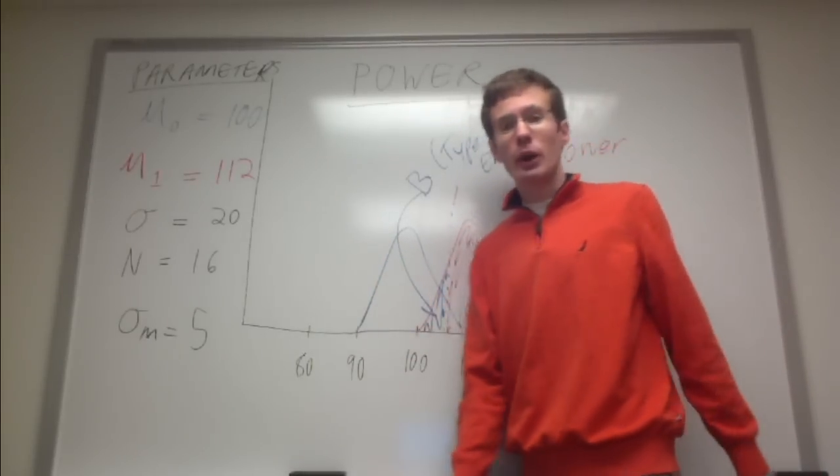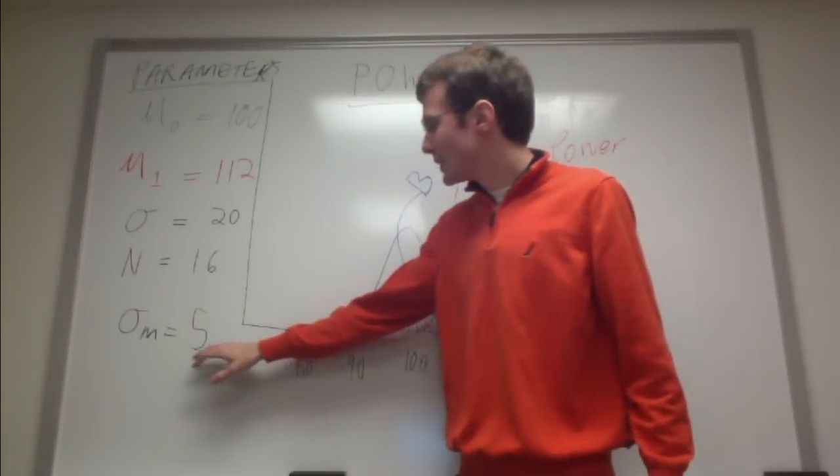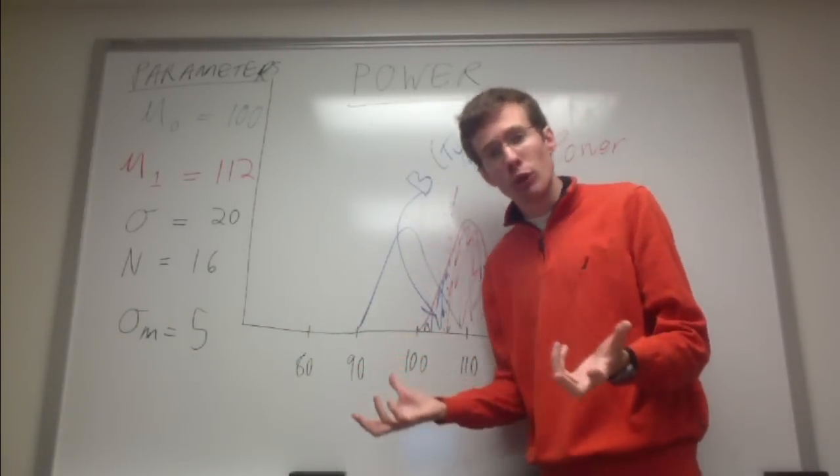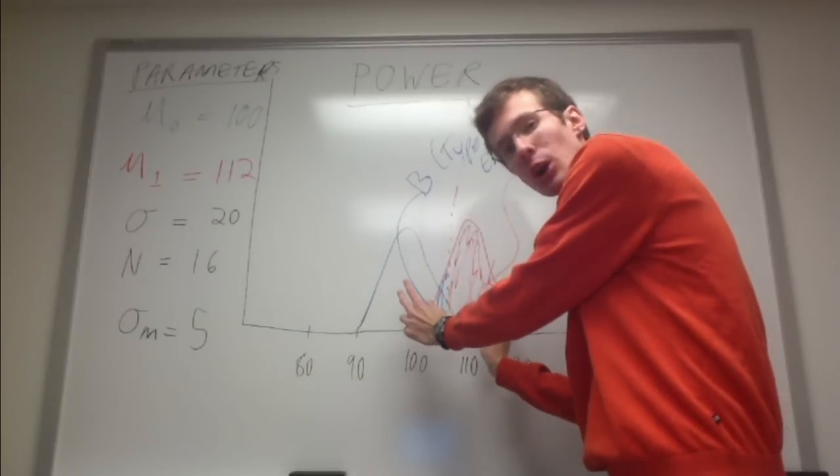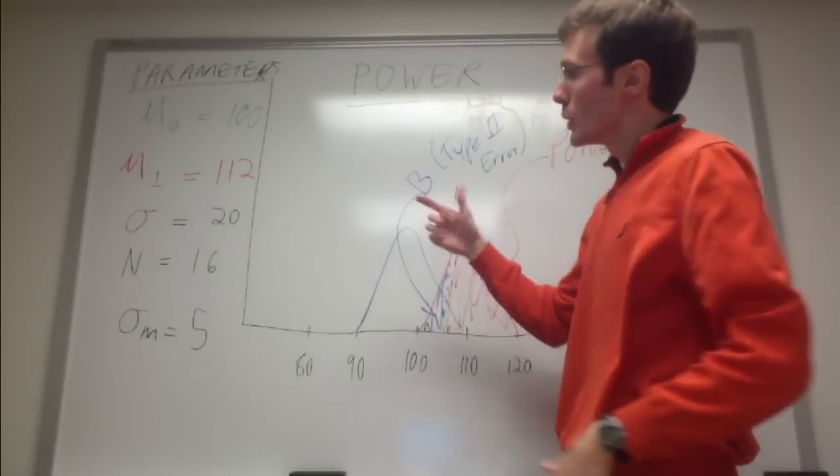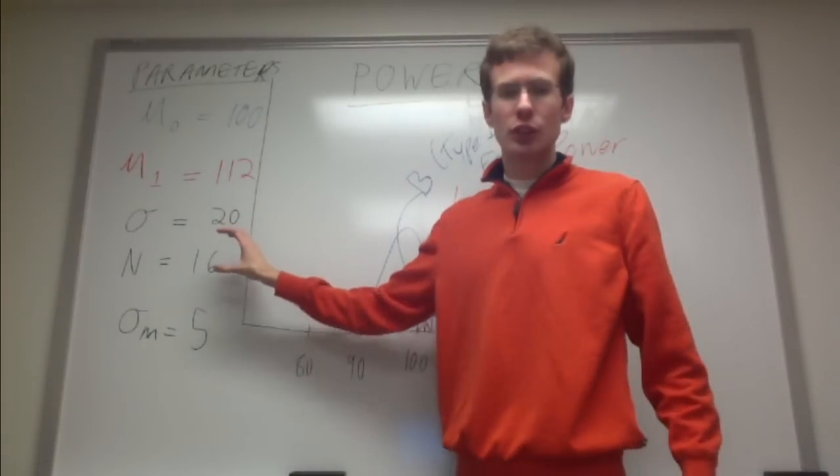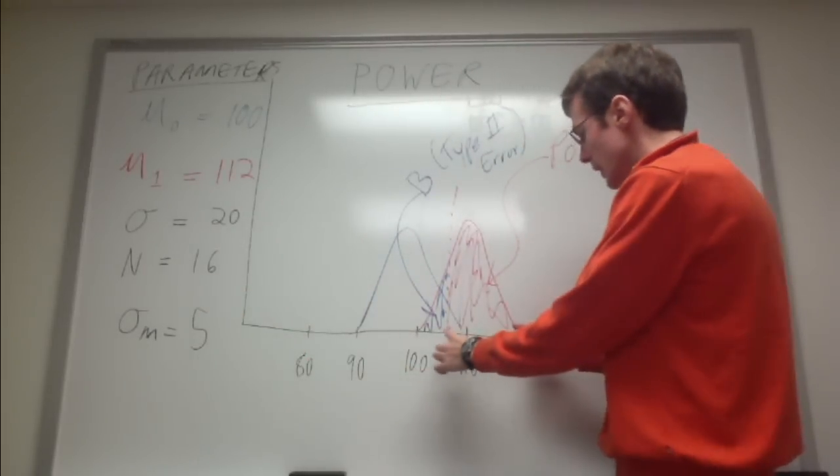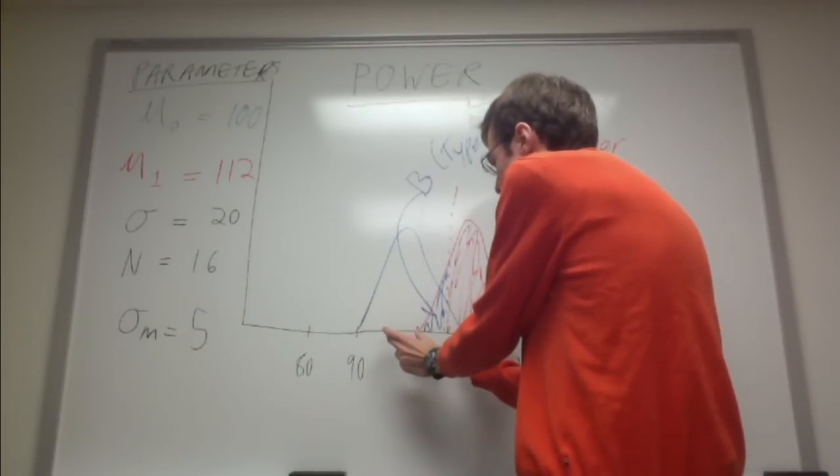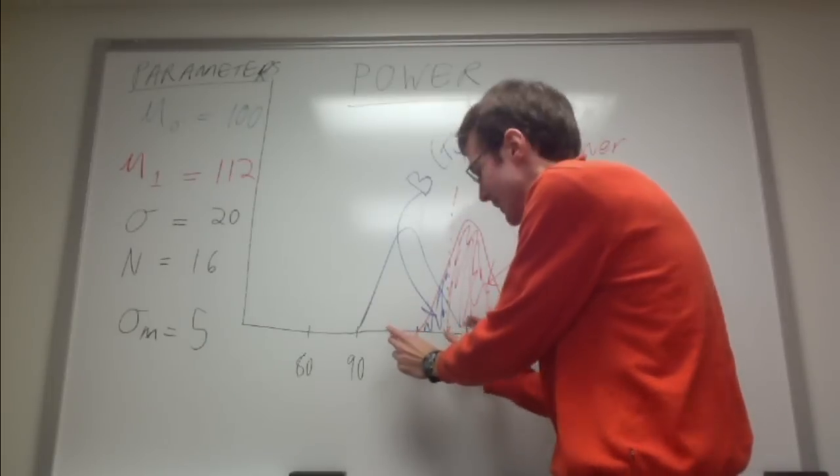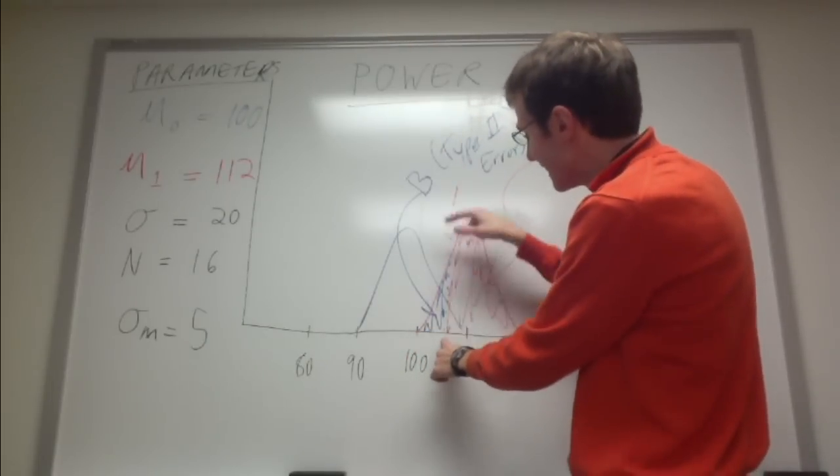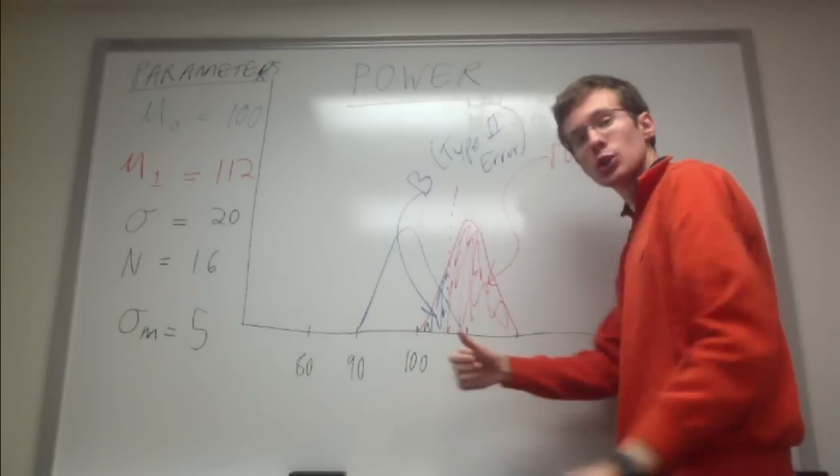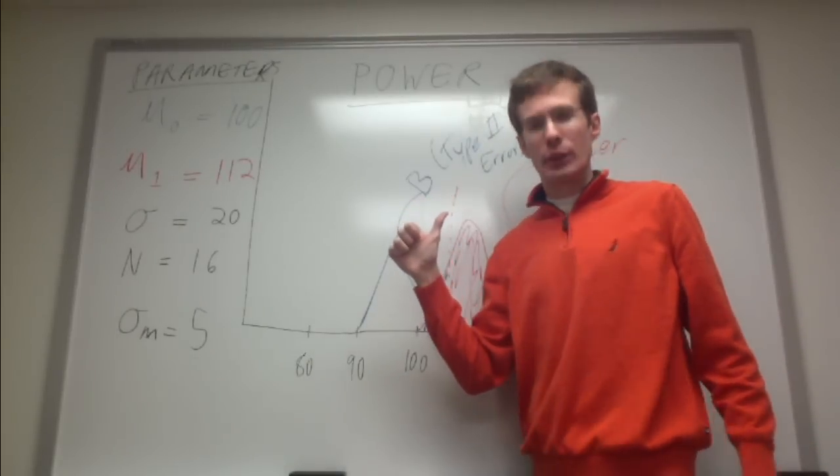Another way we could increase power is by decreasing the standard error of these two distributions so that there's effectively less overlap between them because they are narrower. To do that, we can simply increase the number of subjects in each sample size, and as that goes up, each one of these distributions will become more tightly clustered around their means, and if we maintain the same cutoff threshold, even more of this alternative distribution is going to lie to the right of that threshold, which increases power.